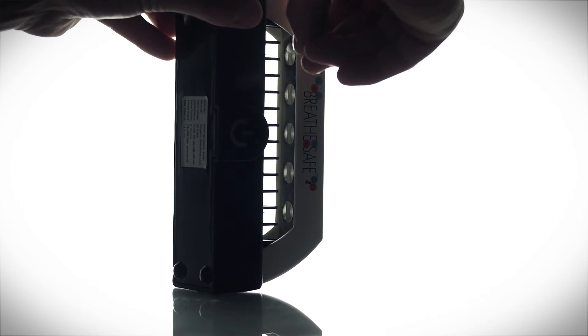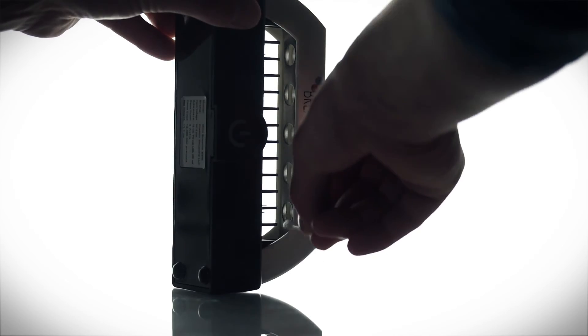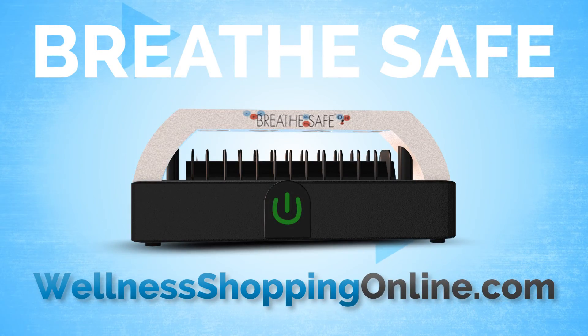Dust and particulates will diminish the ion output, so periodically check to see if the BreatheSafe needs to be cleaned. Simply unplug the BreatheSafe, turn 90 degrees to the side, and use a moist cotton swab to clean the underside of the metal plate and the discharge needles.